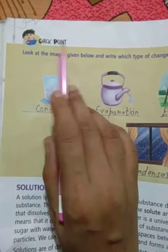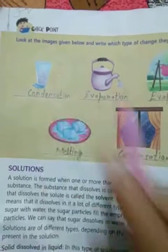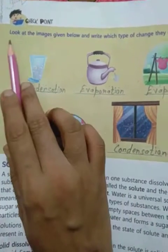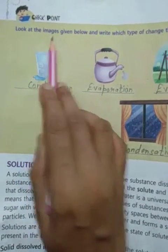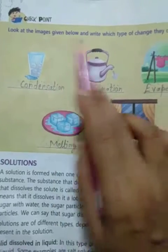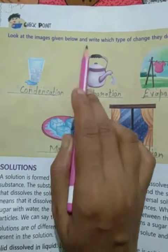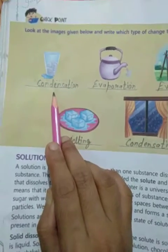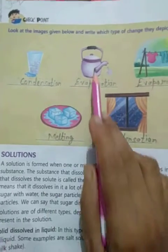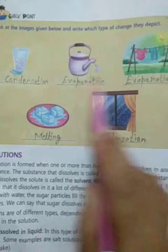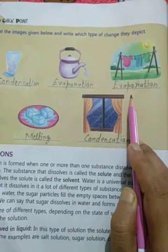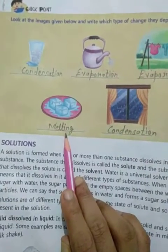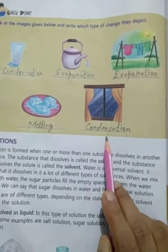Now, we have to understand the checkpoint of this chapter. Look at the images given below and write which type of change they depict. This is condensation. This is evaporation. This is also evaporation. This is melting. This is condensation.